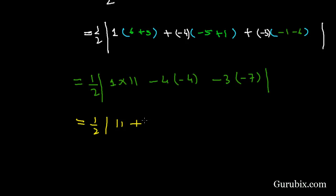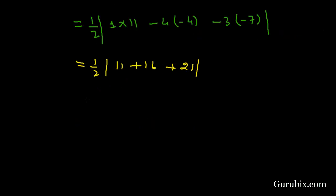11 plus 16 plus 21, this equals to 1 over 2 mod 48, this equals